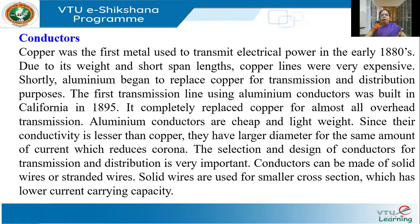Now let's come to the conductors. In the early 19th century, around the 1880s, they used copper. Copper is a fantastic material for conductors because of its properties, but in the 1880s lines were short — not like the thousands of kilometers we have now. Copper is very, very expensive, so slowly copper got replaced with aluminium.